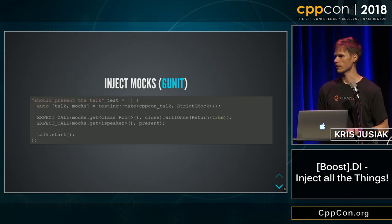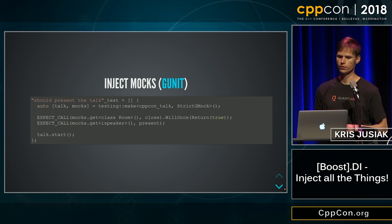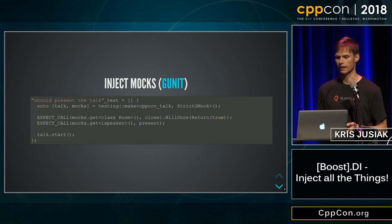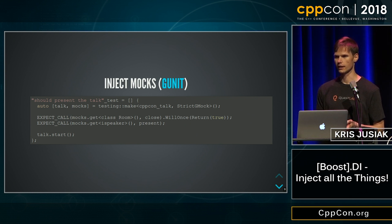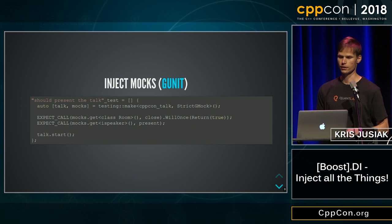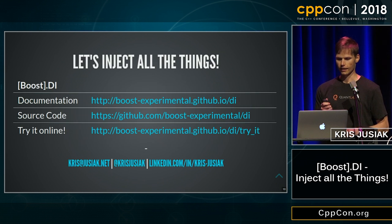We can also inject mocks. Here is an example using GUnit — a different library — where you can ask it to create a class and all the mocks for you. That's very handy for unit testing. You just say 'create me a CVPCON talk' and every interface or abstraction will automatically be a mock. After that, you can just do the expect call on that mock — no need to deal with MOCK_METHOD or anything else. And that's basically it. You can try it online if you want.